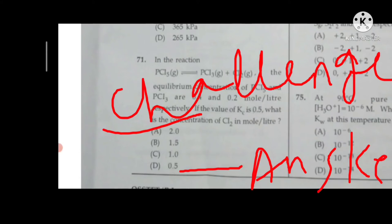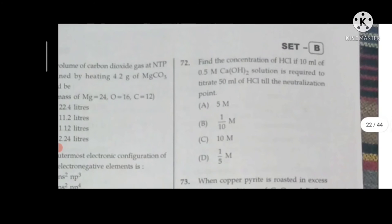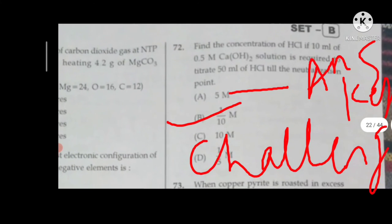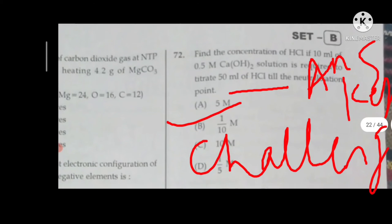Next question is 72. In 72, the answer is A. The answer is option A. This answer is option B. This is one by 10M. Let's go to the 7th number question challenge.